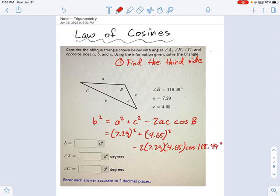And 2 times 7.29 times 4.65 times cosine of 118.49 degrees. I'm saying, what's that equal to? Well, all that gives me this, b squared equals, I'm going to round here, although you shouldn't keep lots and lots of decimals. It's the best way to be right.